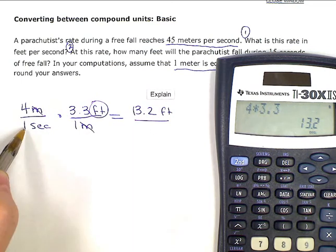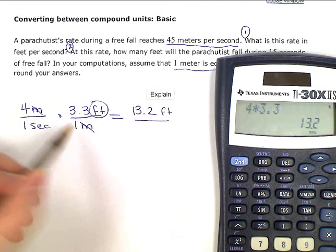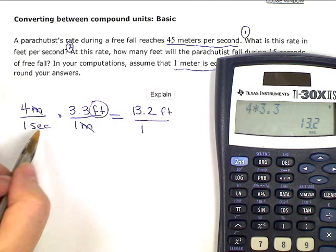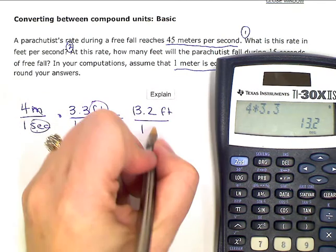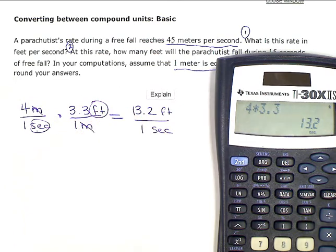In the denominator, I have just 1 times 1, which is just 1. And my units left are seconds.